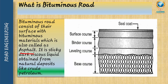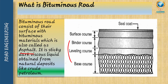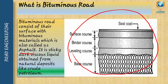As we know, from petroleum, by processing of crude petroleum, we will get bitumen, we will get diesel and all. Bituminous is a material which is used in road construction. Here is the cross-sectional image of the bituminous road. Let us see about this.